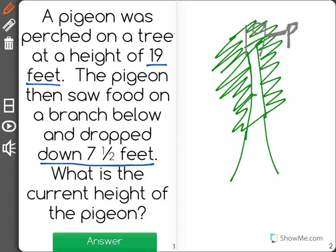Now what happens next is that the pigeon sees food and drops down 7 1⁄2 feet. So it went down 7.5 feet and now it is located right here.